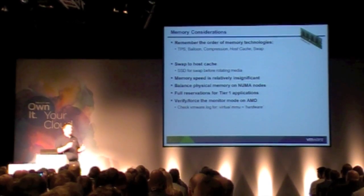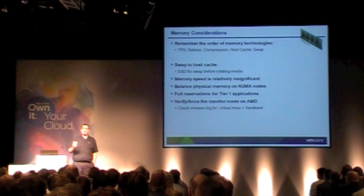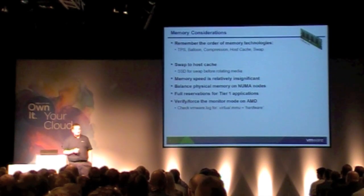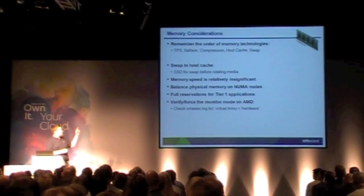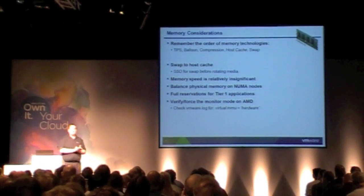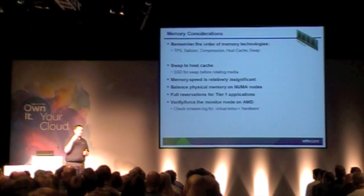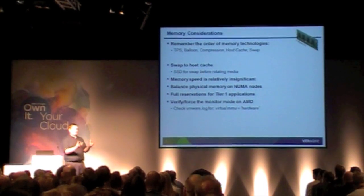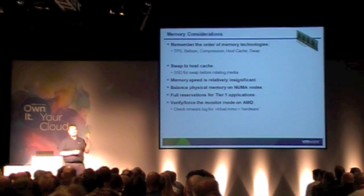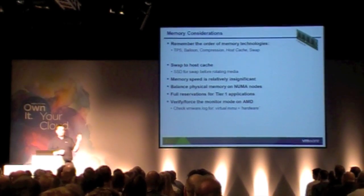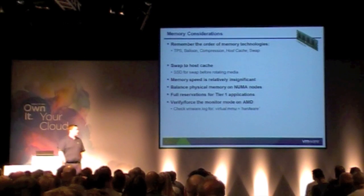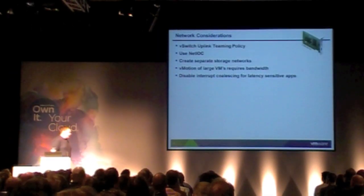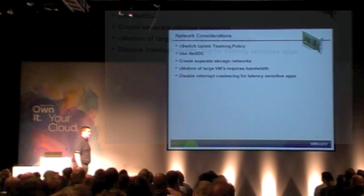Memory speed is relatively insignificant — obviously there are workloads sensitive to that, but the rule of thumb is to make sure you have enough memory first versus fast memory. For tier-one apps, use 100% memory reservations. Keeping it simple means reserving memory for your most important tier-one workloads and letting lower-priority workloads compete, so we don't compromise large databases or large messaging systems.